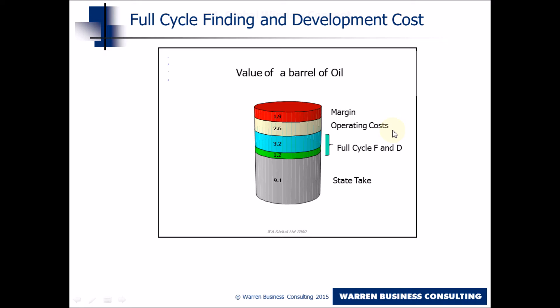But a very important element in the economics is the full cycle finding and development costs. You can see here that's taken out about a fifth of the value of the barrel, and that's one cost that you as an explorer or a developer can control — the efficiency of exploration, the efficiency of development.